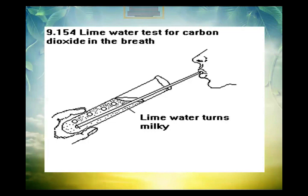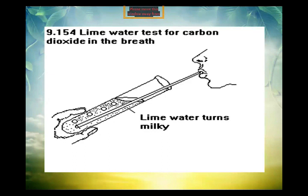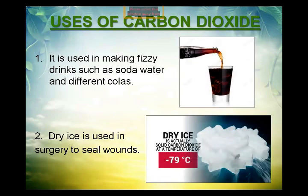When carbon dioxide reacts with calcium oxide, it forms calcium carbonate. The equation is: CaO + CO2 → CaCO3. The product is calcium carbonate, which is also known as marble chips or limestone.